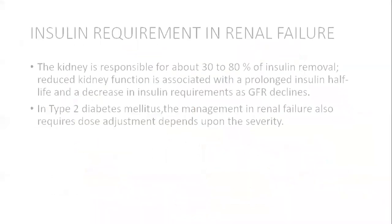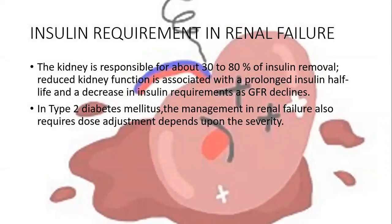Now, insulin requirement in renal failure: the kidney is responsible for about 30 to 80% of insulin removal, and reduced kidney function is associated with prolonged insulin half-life and decreased insulin requirement. This means that the person should take insulin in a lesser dose in order to clear it from the body, since the kidney is not working adequately. In type 2 diabetes mellitus management and renal failure, dose adjustment is required depending on the severity.